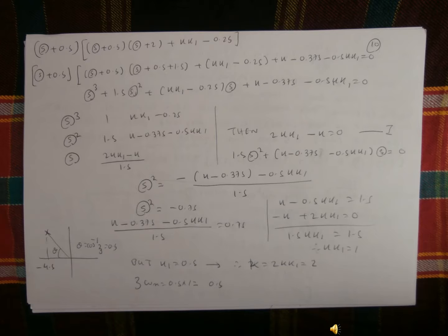So the original equation you solve. That will be, by multiplying, what you got is x³ plus 1.5x² plus (kk1 minus 0.25)x plus k minus 0.375 minus 0.5·kk1 equal to 0.